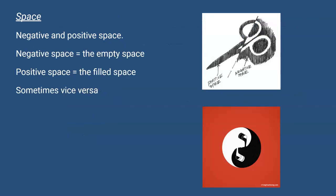Now space, there's negative and positive space. Negative space is mostly the empty space, which is like the blank canvas. Positive space is what's filled into that, such as the drawing like you can see here in the pair of scissors. Sometimes it can be reversed, like in this picture of the yin and yang, how both positive and negative spaces are being used.